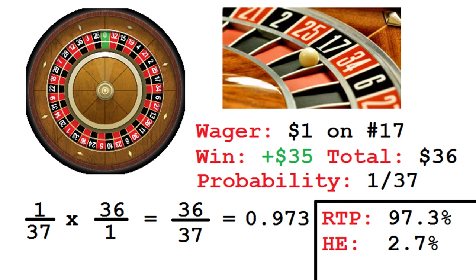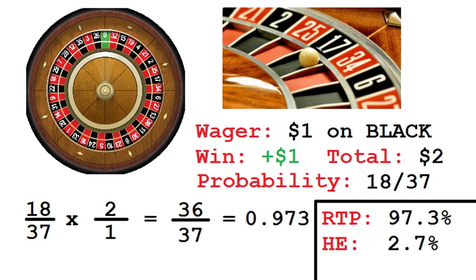The RTP is the same for every possible bet on a roulette layout. For example, let's assume you want to bet $1 on black. There are 18 black numbers and 19 non-black numbers. The probability of the ball landing on black is 18 over 37. The total payoff is $2 — your $1 original bet and $1 in winnings. Multiply 18 over 37 times 2, and the result is once again 36 over 37, for an RTP of 97.3%.